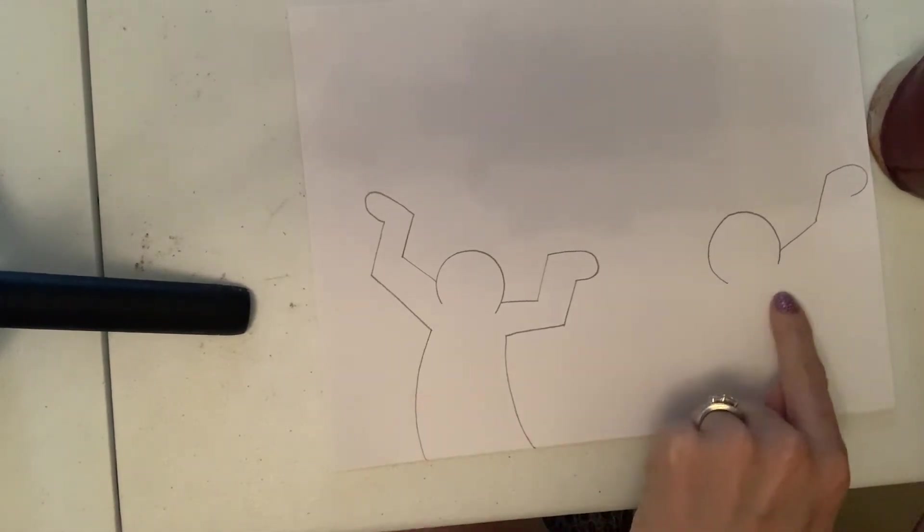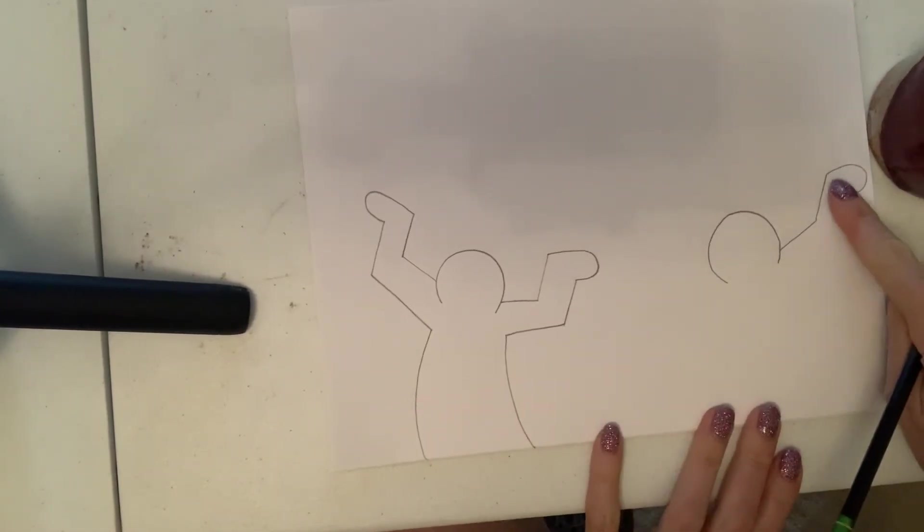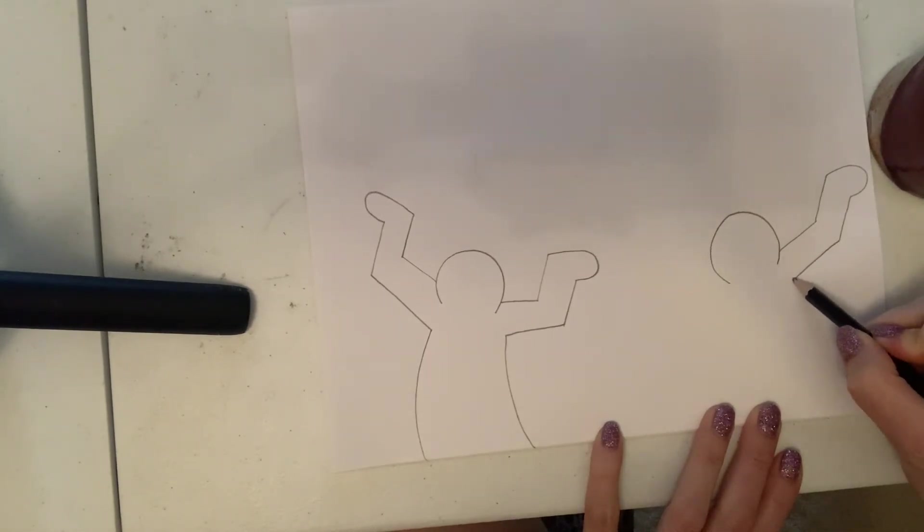Next we'll do the bottom of the arm following the same direction that the first lines went. We're going to go diagonal down and to the left. And then down and to the left some more.